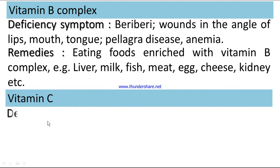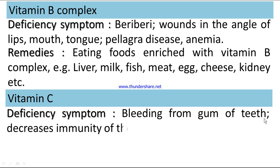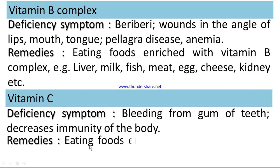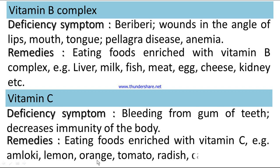Vitamin C: Deficiency symptoms include bleeding from the gums of teeth and decreased immunity of the body. Remedies: eating foods enriched with Vitamin C, such as amla, lemon, orange, tomato, radish, cauliflower, etc.